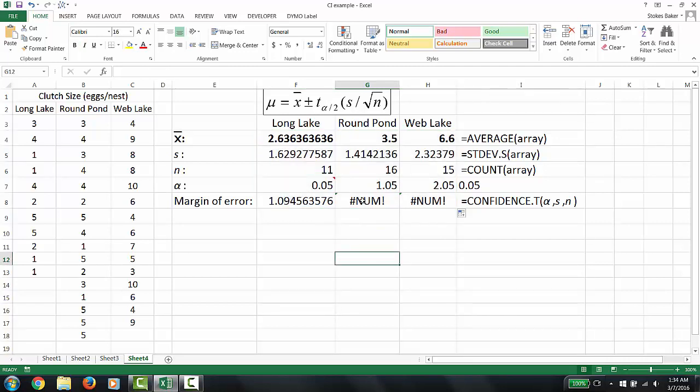You notice these last two cells say number. The reason for that is Excel made the assumption that we want to add the value of 1 to our alpha. We don't. So we're going to set these back to 0.05. And now we have our calculations.